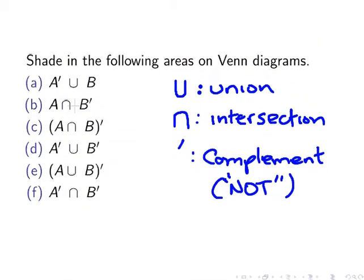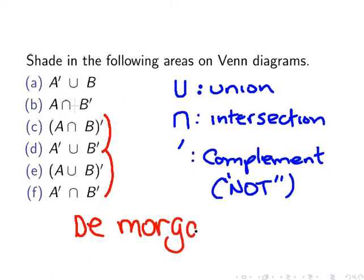Going back to that point: we've found that expressions C and D are equivalent to each other, and expressions E and F are equivalent to each other. This is actually what is known as DeMorgan's Laws, which are vitally important in properly understanding set theory — and also quite important in computer programming when performing complex logical operations. That ends our presentation.